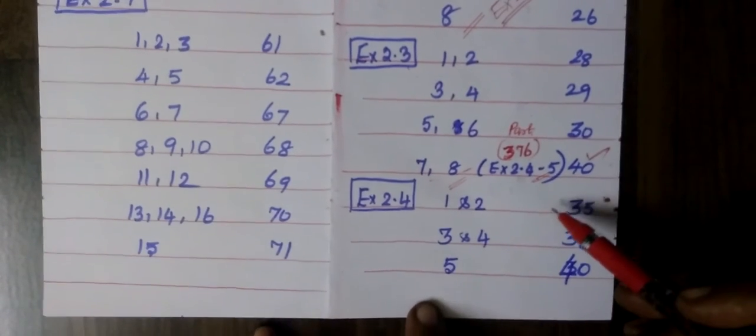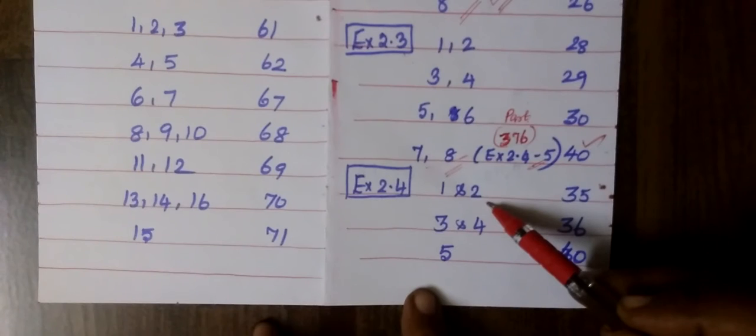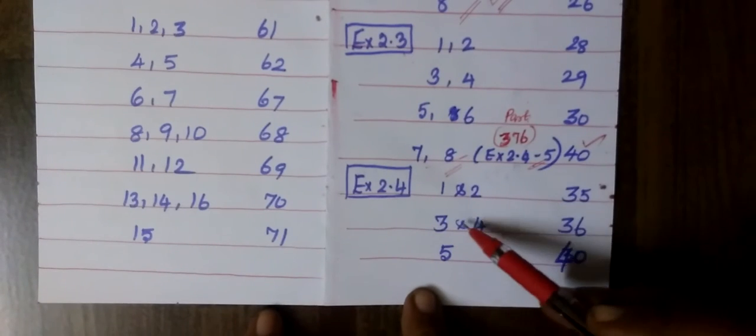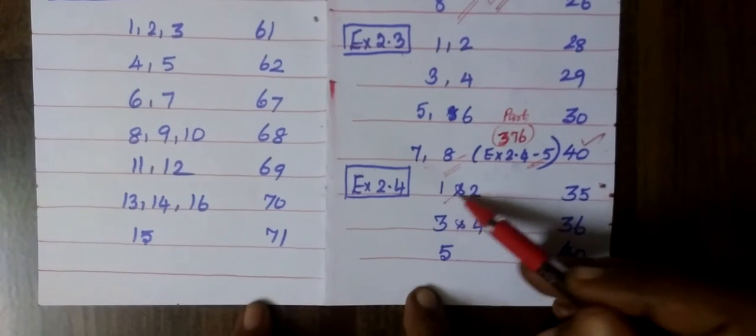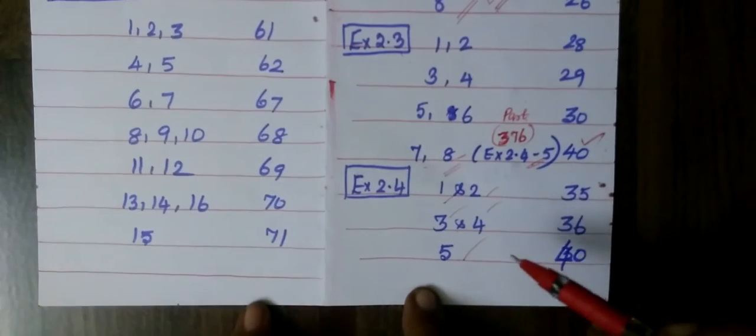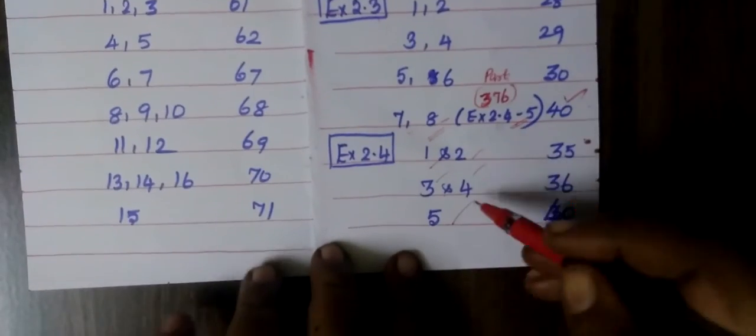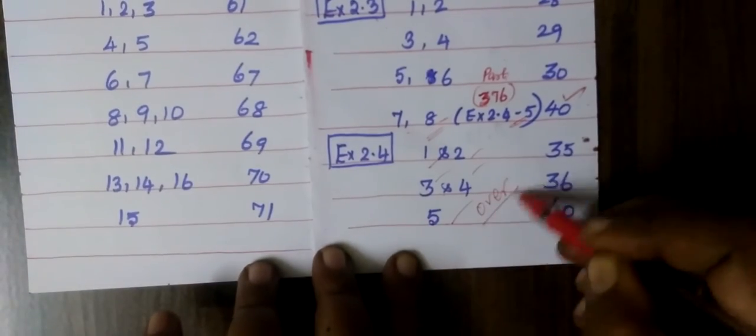And coming to Exercise 2.4, you see question numbers 1, 2, 3, 4, 5. So Exercise 2.4 is over.